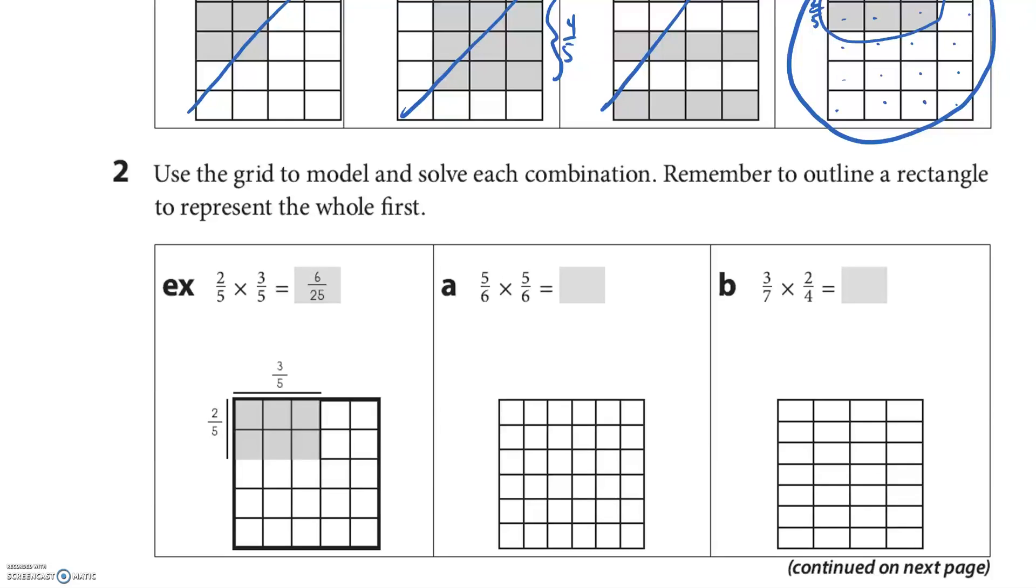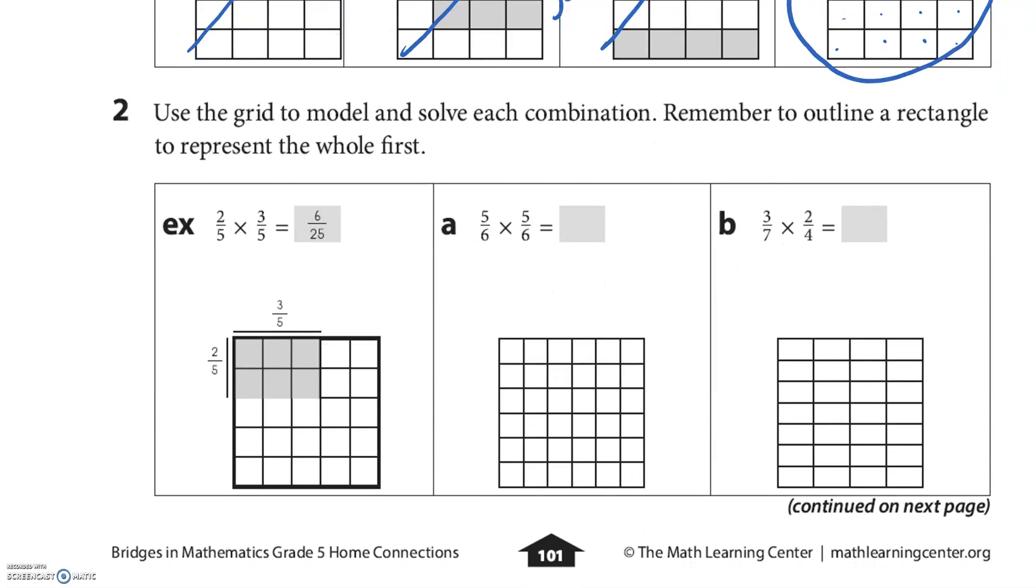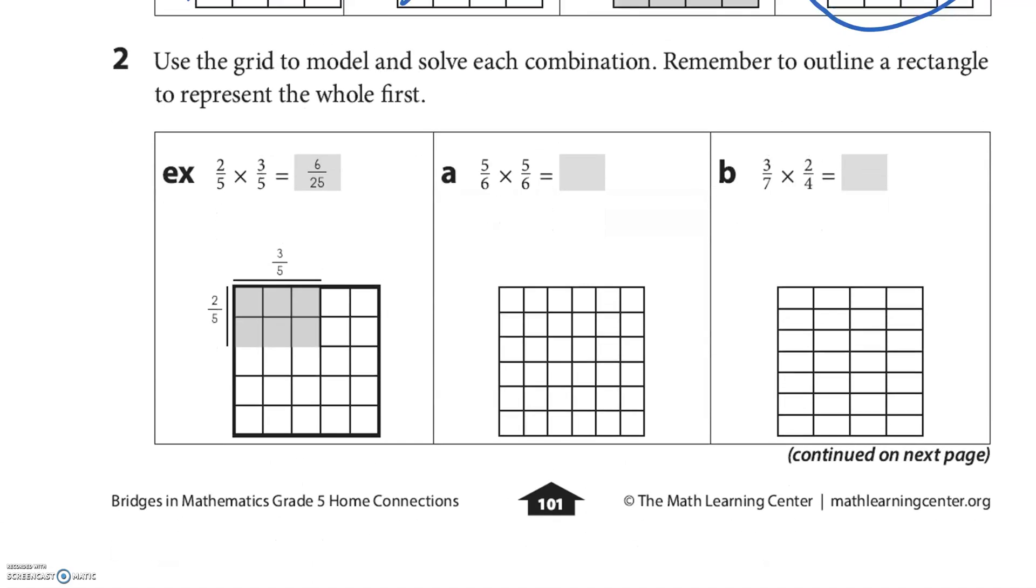All right, let's see the next one. Use the grid to model and solve each combination. Remember to outline a rectangle to represent the whole first. Number 2: use the grid to model and solve each combination. Remember to outline a rectangle to represent the whole first.